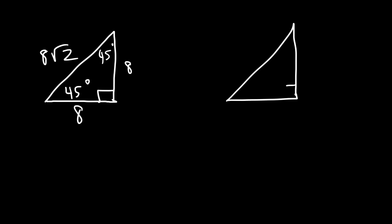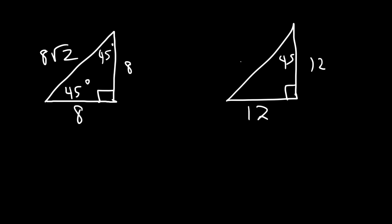For the next example, the other leg is also 12 units long, and the hypotenuse is going to be that number times the square root of 2 — so it's 12√2.